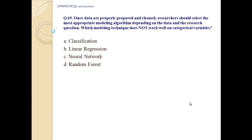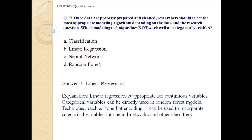Question number 69. Once data are properly prepared and cleaned, researchers would select the most appropriate modeling algorithm depending on the data and the research question. Which modeling technique does not work well on categorical variables? A. Classifications. B. Linear regression. C. Neural network. D. Random forest. Answer B. Linear regression. Explanation: linear regression is appropriate for continuous variables. Categorical variables can be directly used in random forest models; techniques such as one-hot encoding can be used to incorporate categorical variables into neural networks and other classifiers.